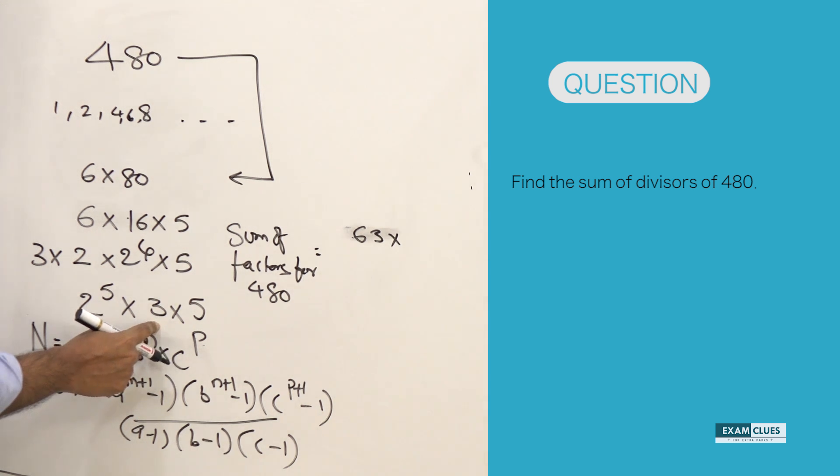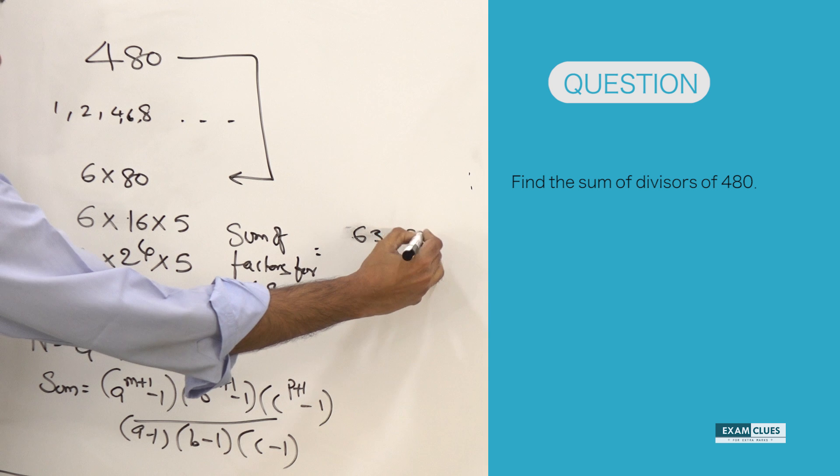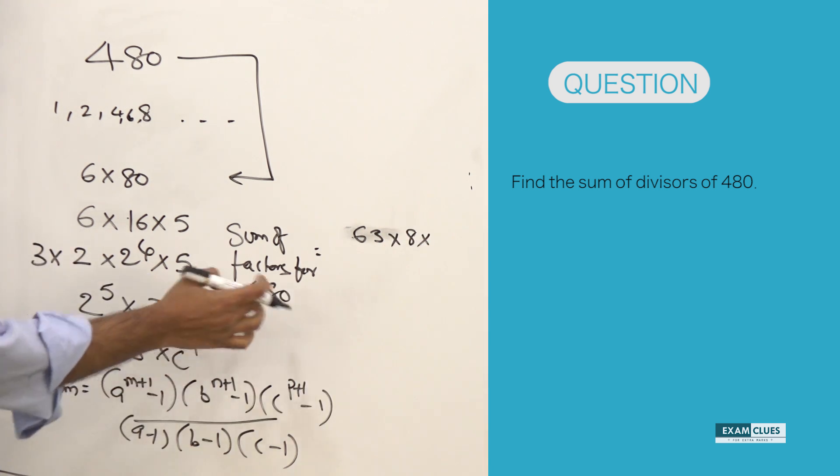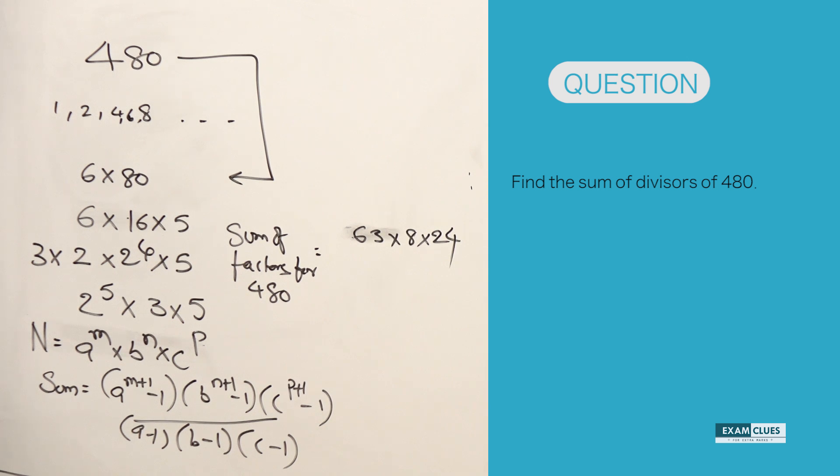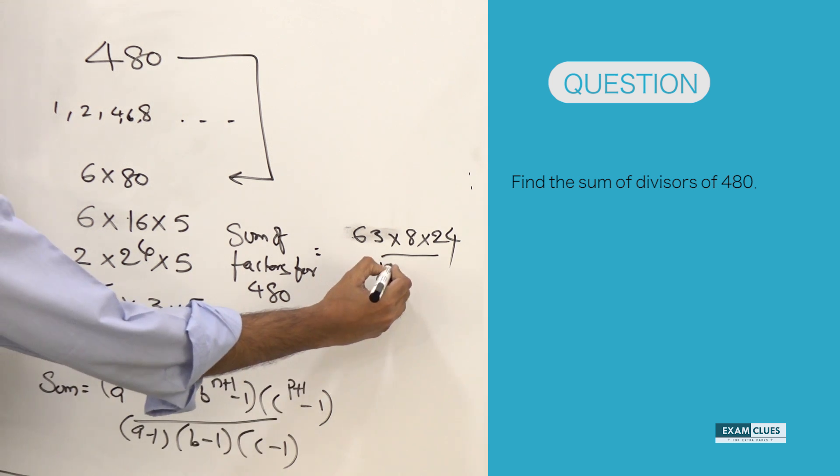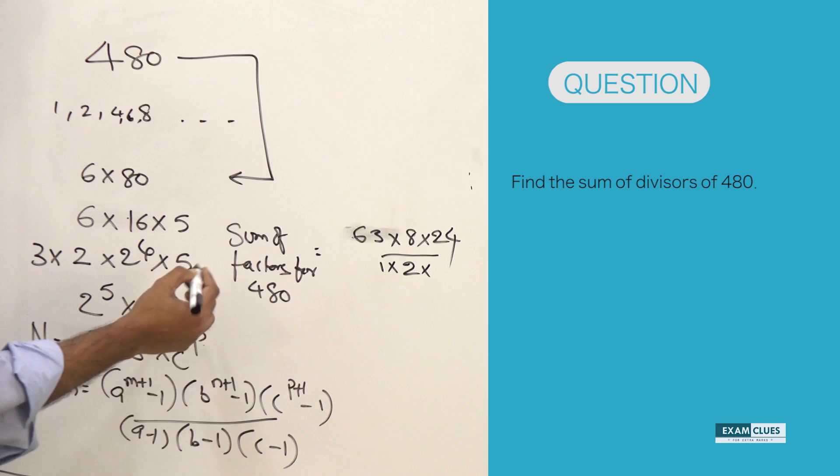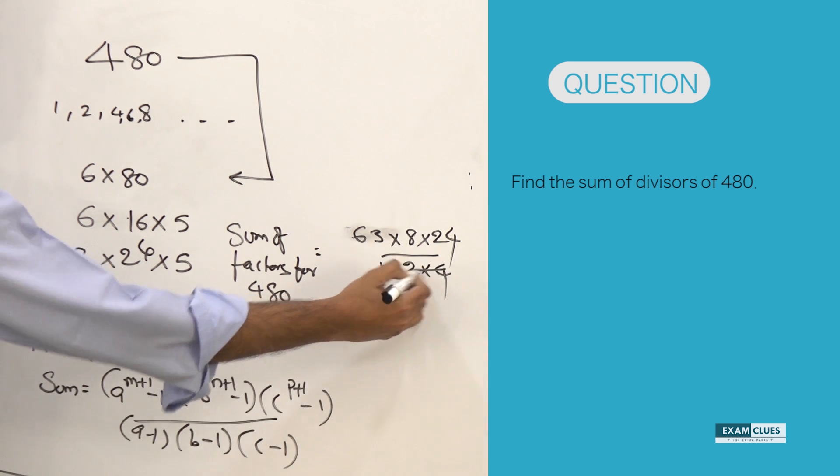Then 3 square minus 1, which is nothing but 8. Then 5 square minus 1, which is nothing but 24. And you should divide this by a minus 1, that is 2 minus 1, that is 1. 3 minus 1, which is 2, and 5 minus 1, which is 4. Let's cancel it now.